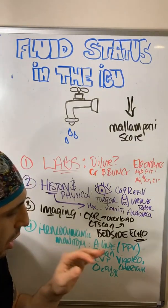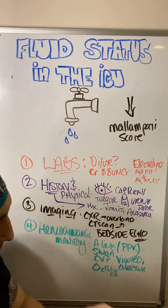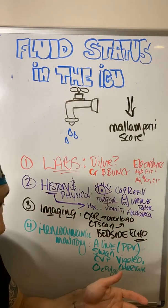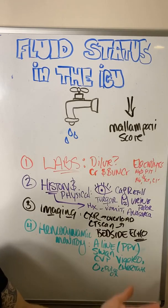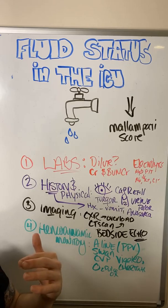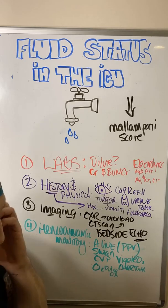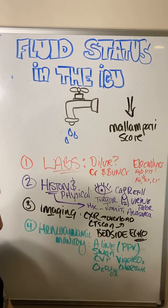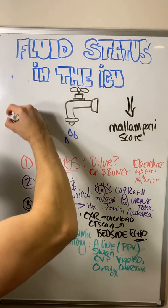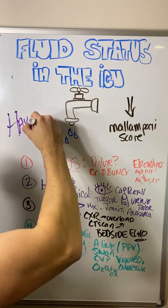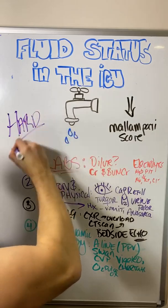Left ventricular end-diastolic pressure can be assessed with a Swan — look at pulmonary artery pressures and whether left ventricular end-diastolic pressure is super high, especially in a patient with poor EF. Evaluating fluid status in the ICU is hard. There's not a single good way to do it — that's the reality.